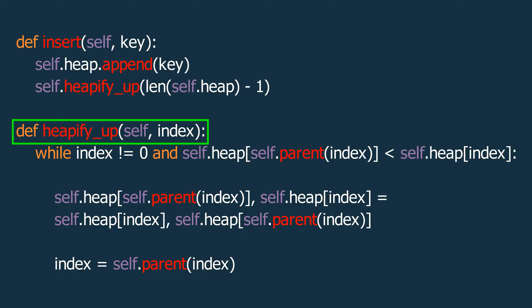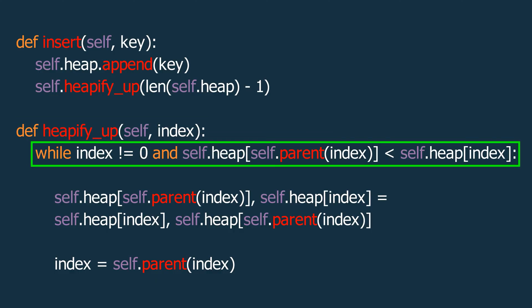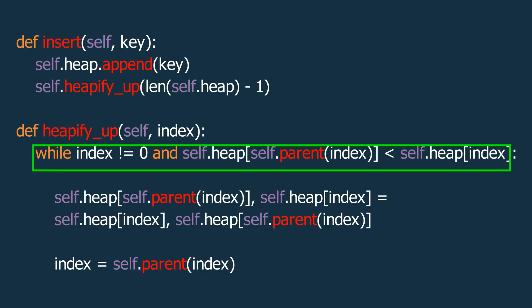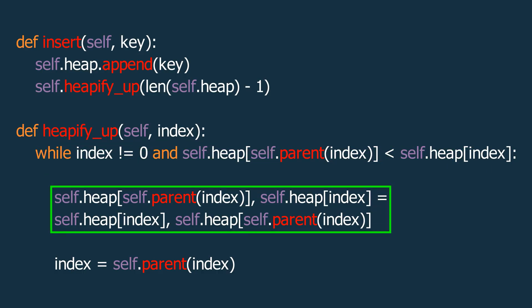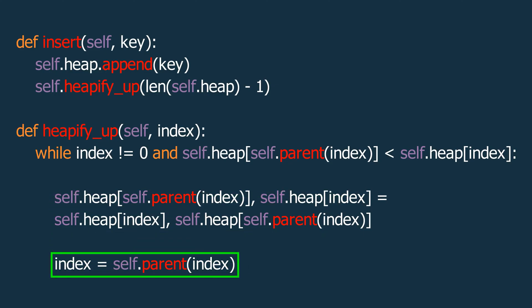The heapifyUp function takes the index of the newly inserted element as its input parameter. Inside this function, we use a while loop that runs as long as the current element is not the root, and the parent element is smaller than the child. Within the loop, we swap the parent and child elements to maintain the max heap property. After each swap, we update the index to the parent's index, effectively moving the element up the heap until it's in the correct position or reaches the root.